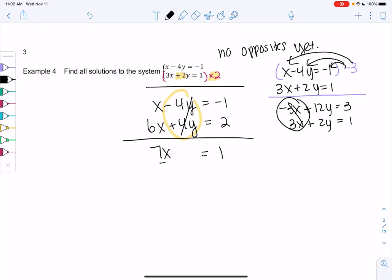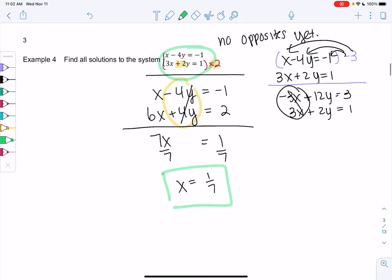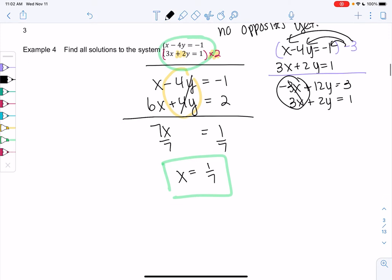And so we divide by 7, we divide by 7, and x is equal to 1/7. And then we'll back substitute into either one. Again, to me, the first one looks a little easier, but you might feel differently.